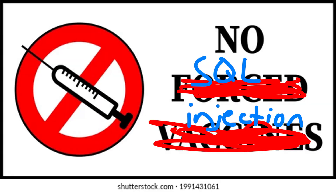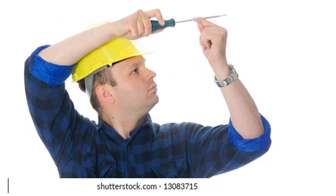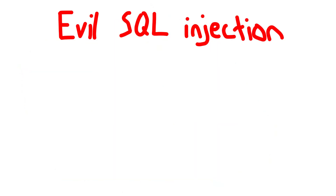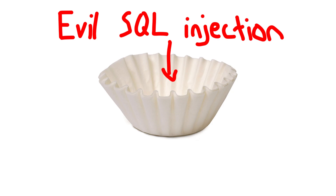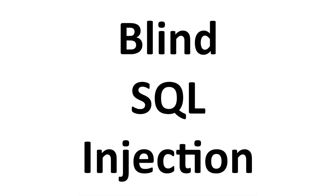Okay, so how do you prevent SQL injections from happening? There's really only one way to fix a SQL injection vulnerability, and that's to run the user input through a filter before passing it to the SQL query. Anything else wouldn't really work, and stupid solutions have the potential to be bypassed by blind SQL injection.